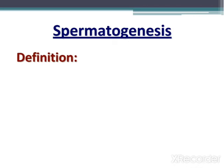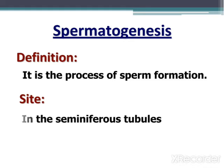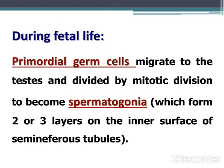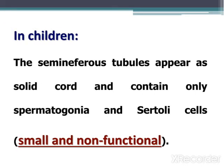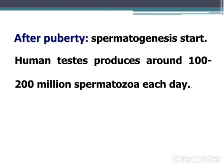Spermatogenesis occurs inside the seminiferous tubules. During fetal life, primordial germ cells migrate to the testis and divide by mitotic division to become spermatogonia, which form two to three layers on the inner surface of seminiferous tubules. In children, the seminiferous tubules appear as solid cords and contain only spermatogonia and Sertoli cells, which are small and non-functional. After puberty, spermatogenesis occurs.